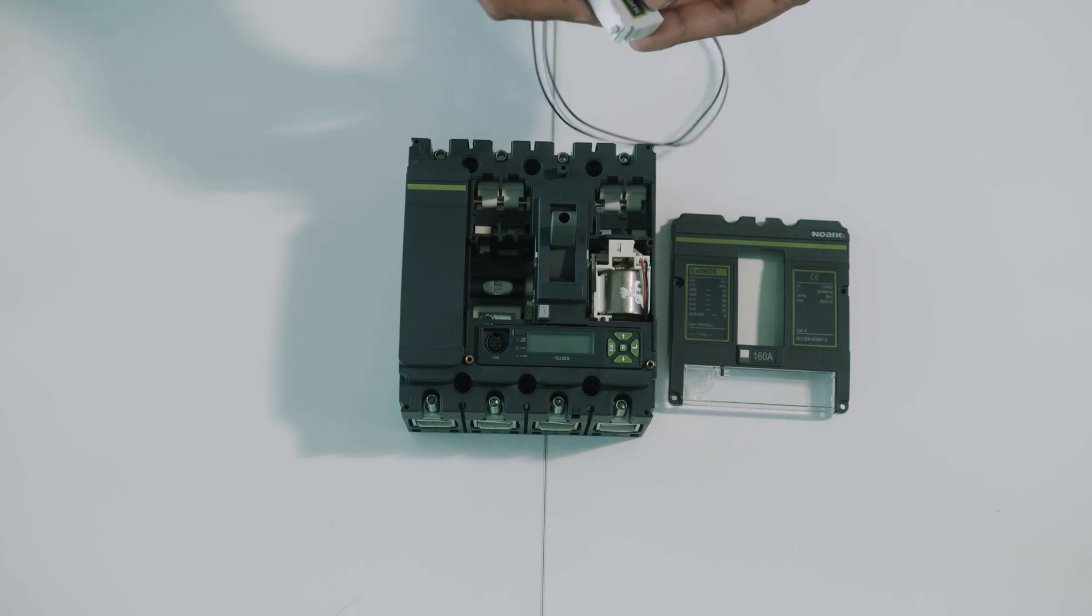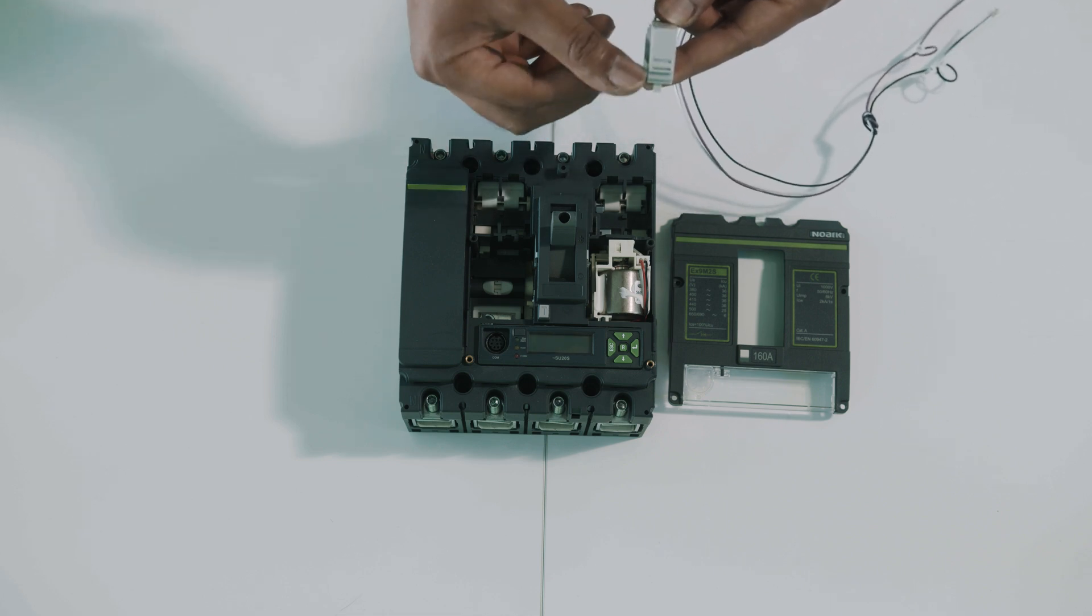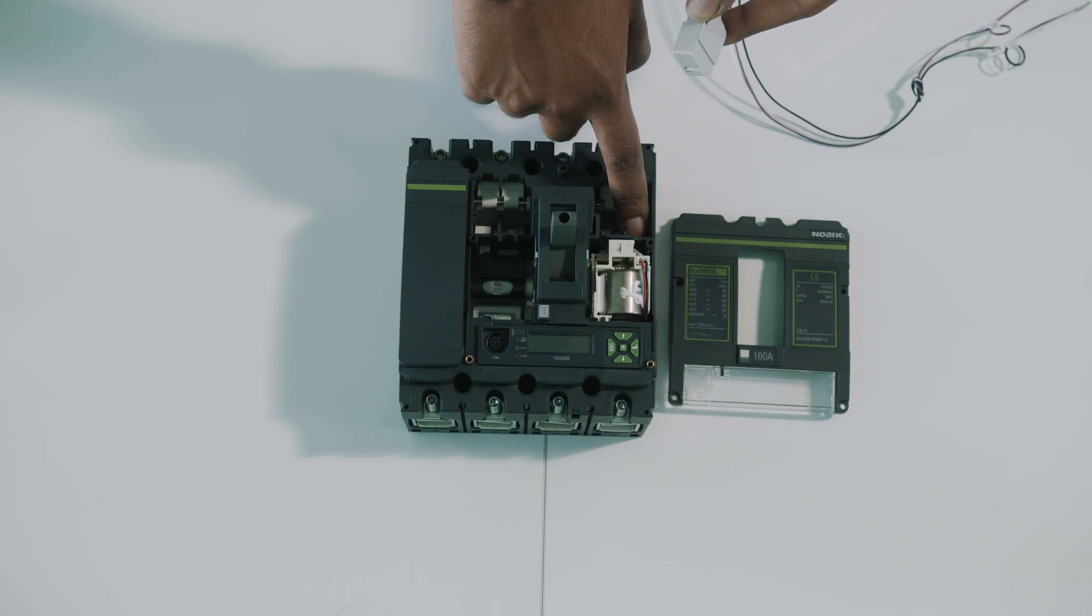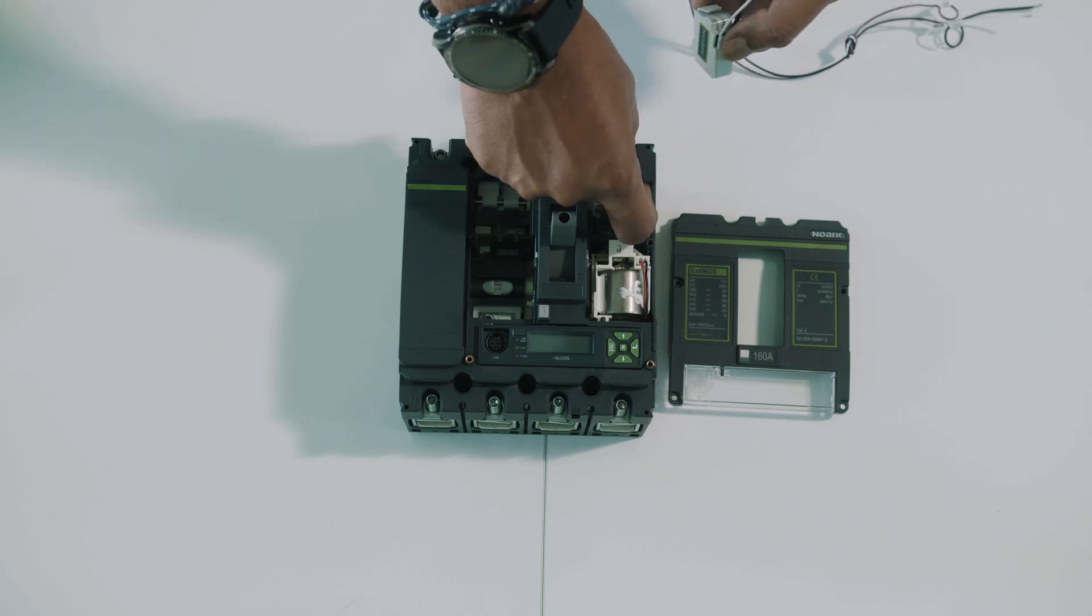So if the circuit breaker is in ON position, auxiliary contacts are going to be in ON position. If the breaker is in OFF position, auxiliary contacts will be in the same OFF position. The procedure for installation is first we will place this gap inside of the circuit breaker and later on we will push till this toggle is inside of this gap.